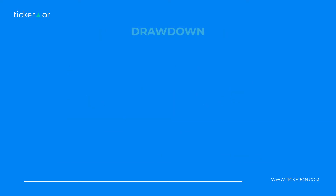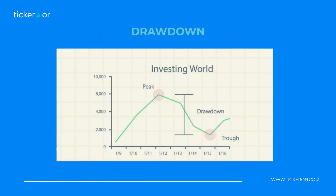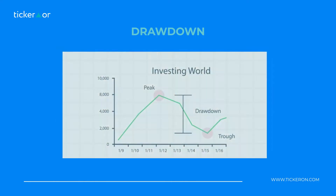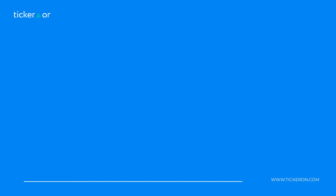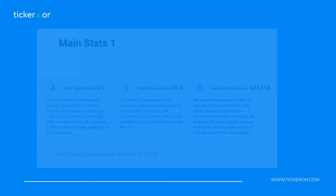Next up is understanding your risk profile. It's not just about drawdown, which is the amount you can lose from your peak. The more risk you take, the more drawdown you allow. So knowing your risk tolerance is what's important.